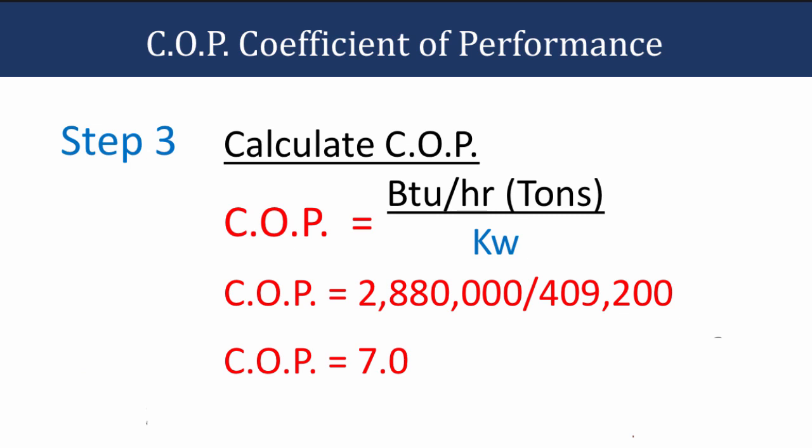The calculation is simple. We take the output on top — 2,880,000 BTUs per hour — divided by the input 409,200 BTUs per hour, and it gives us a COP of 7. We'll explain what this number means, whether that's good or bad, in the next few slides.